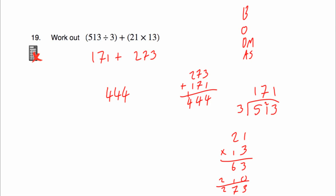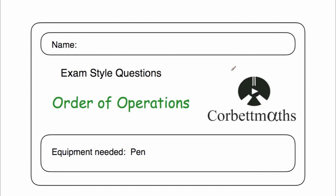I hope you found this video useful and that it's helped you with the order of operations. Remember: brackets first, then orders or indices, then divisions and multiplications, then additions and subtractions. If you just have additions and subtractions, work from left to right — same with multiplications and divisions.